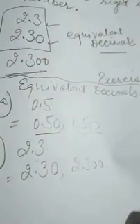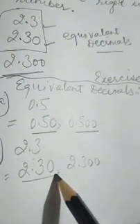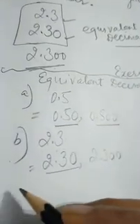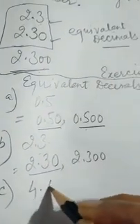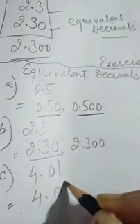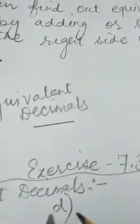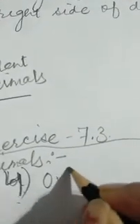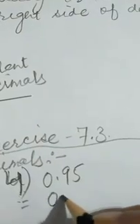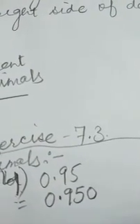You can write one equivalent decimal value or two — it's your wish, and it also depends upon the question. The next is 4.01; the equivalent decimal will be 4.010. Then in sum number 4, 0.95 — the equivalent decimal will be 0.950.